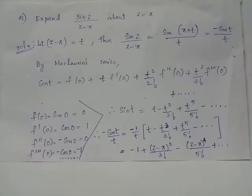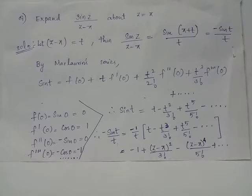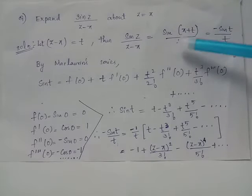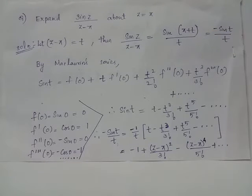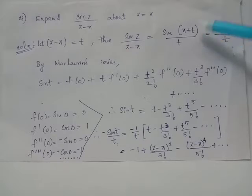We consider sin(z) / (z - π) about z = π. Suppose z - π = t, then sin(z) can be rewritten as sin(π + t), and z - π becomes t. Therefore the given function becomes sin(π + t) / t. Using the identity sin(π + θ) = -sin(θ), sin(π + t) can be written as -sin(t).